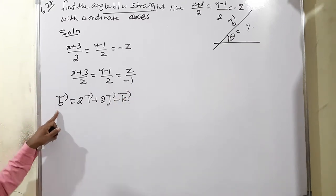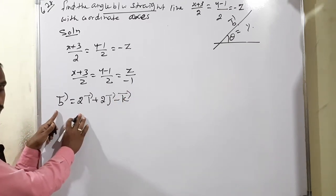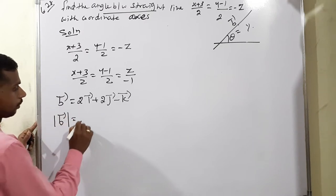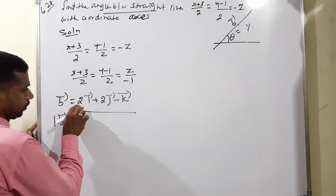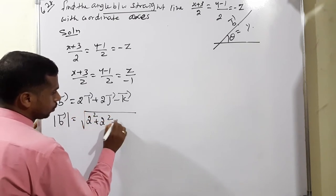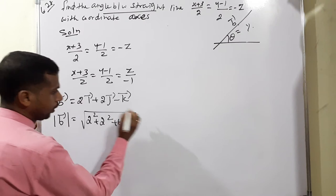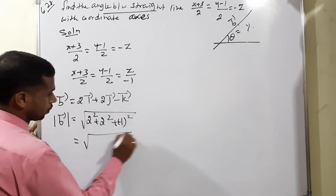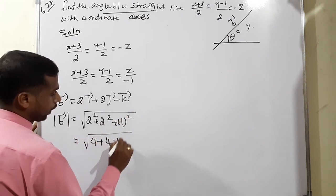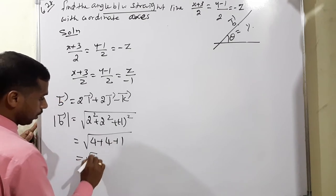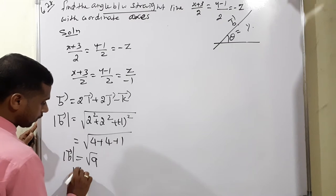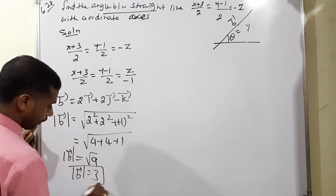After getting the B vector, we need to find the modulus. Modulus of B vector equals square root of 2 squared plus 2 squared plus negative 1 squared, which is square root of 4 plus 4 plus 1 equals square root of 9. Therefore, modulus of B vector equals positive 3.